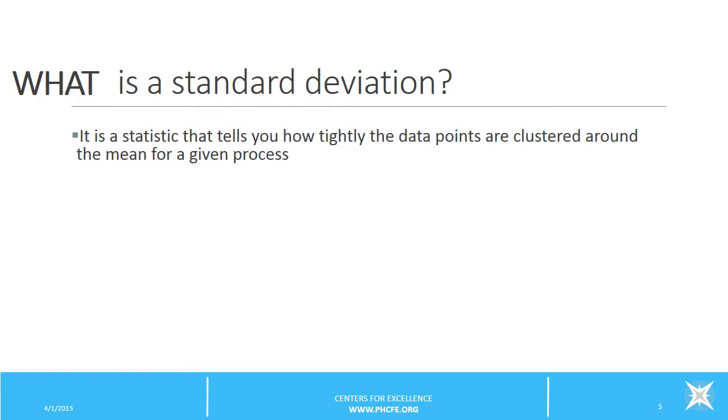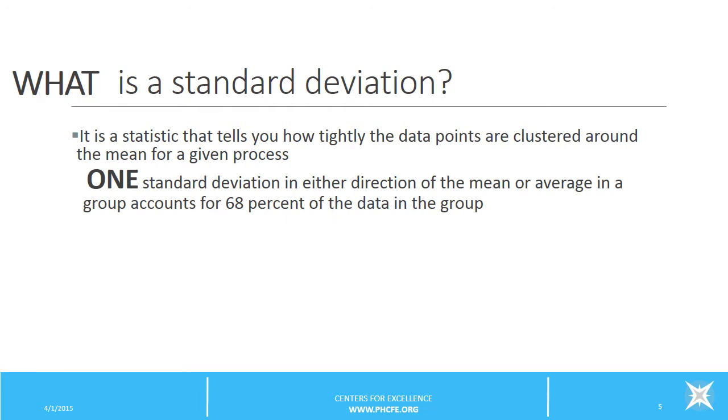Analysts generally talk about the number of standard deviations from the mean. One standard deviation in either direction of the mean or average in a group accounts for 68% of the data in that group.